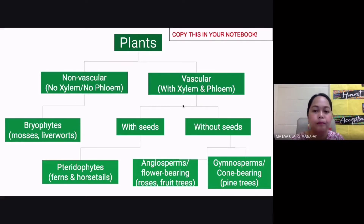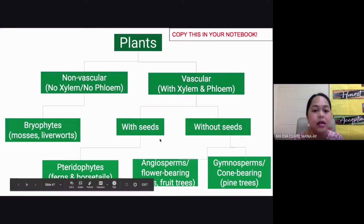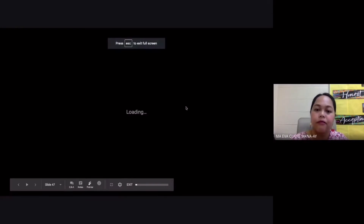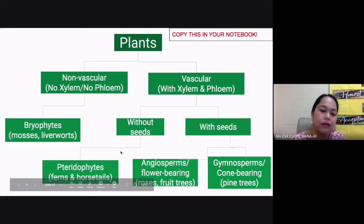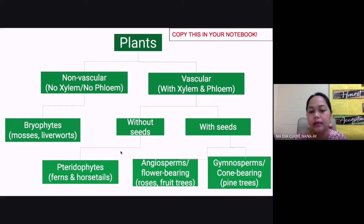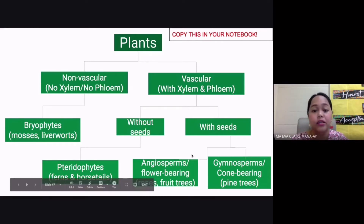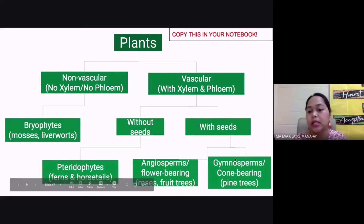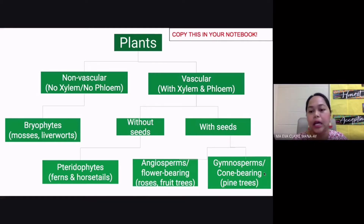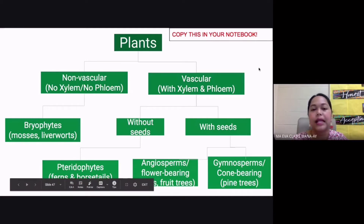There are two types of vascular plants: those with seeds and those without seeds. Vascular plants without seeds are called pteridophytes — examples include ferns and horsetails. Vascular plants with seeds include angiosperms, which are flower-bearing plants like roses and fruit trees, and gymnosperms, which are cone-bearing plants like conifers and pine trees.